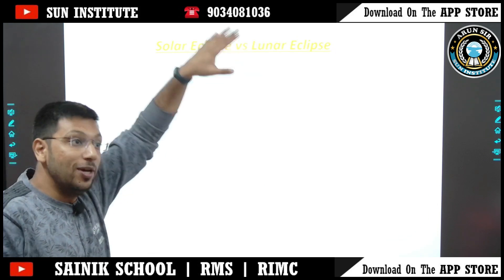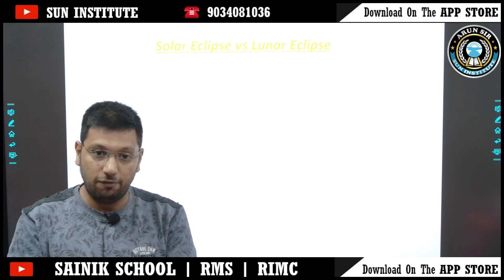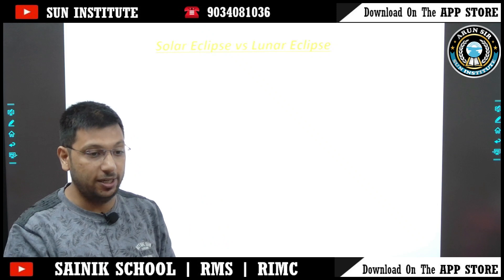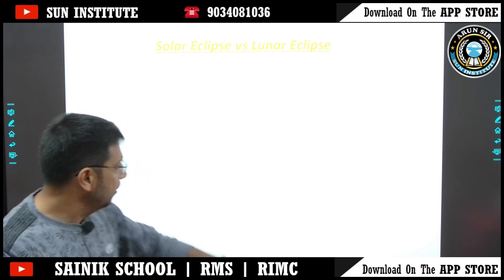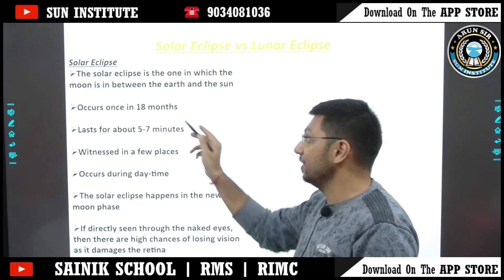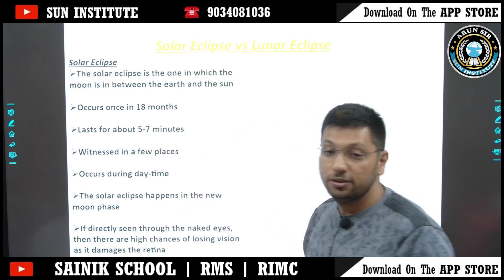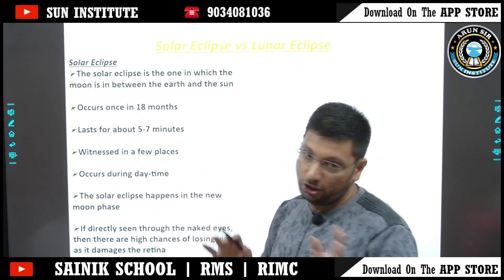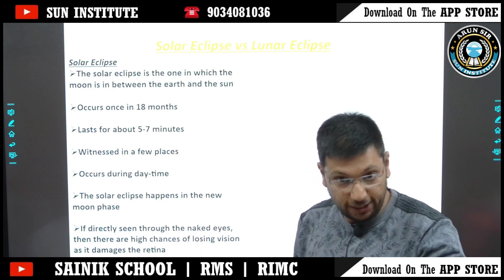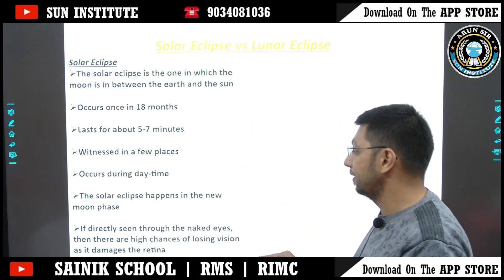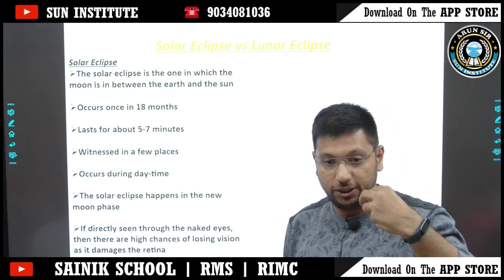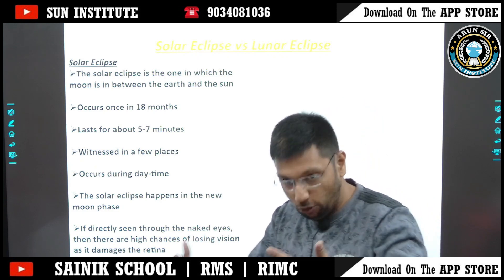Solar eclipse versus lunar eclipse. In this comparison, all the questions and answers will be covered that may come in the exam. Solar eclipse: the Moon is between the Earth and the Sun. It occurs once in 18 months, lasts for about 5 to 7 minutes, is witnessed in few places, and occurs during daytime. The solar eclipse happens during the new moon phase. If directly seen through the naked eyes, there are high chances of losing vision as it damages the retina — where the picture of what we see is formed. We will discuss why in the next slide.